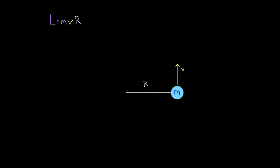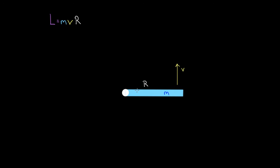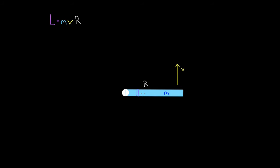You could probably reason that out yourself, because for the ball, all the mass was traveling at speed v and all the mass was at the outside edge — all the mass is traveling at a radius of r. But for this rod, only the outside edge of the mass is actually traveling at radius r. The rest of the pieces of mass, like this one in here, trace out a circle, but with a smaller radius — a diminished r value.